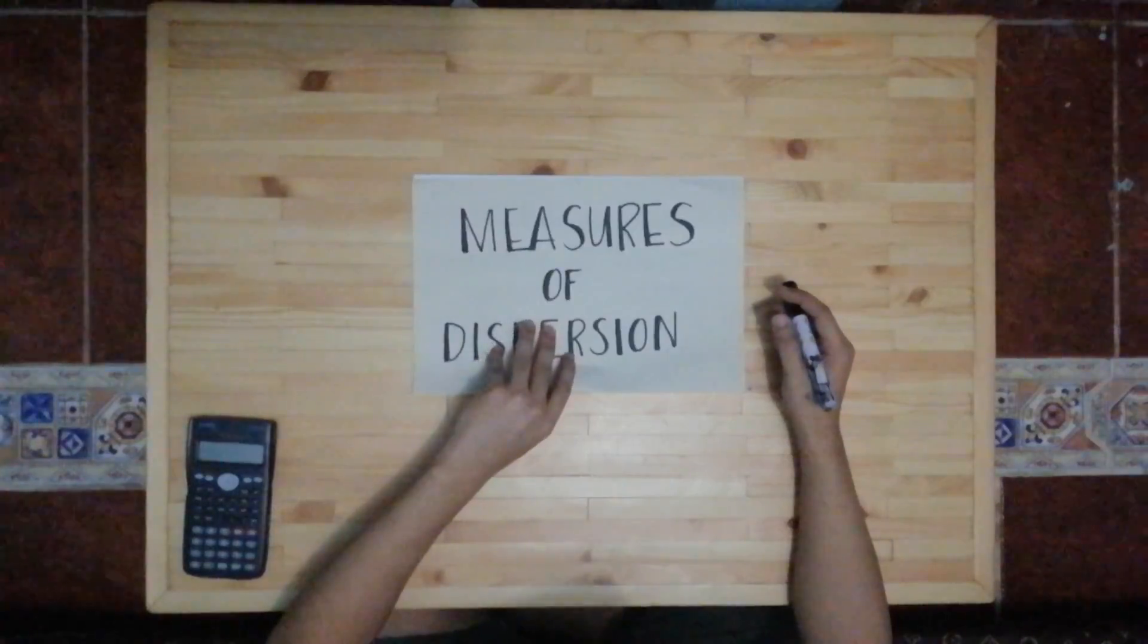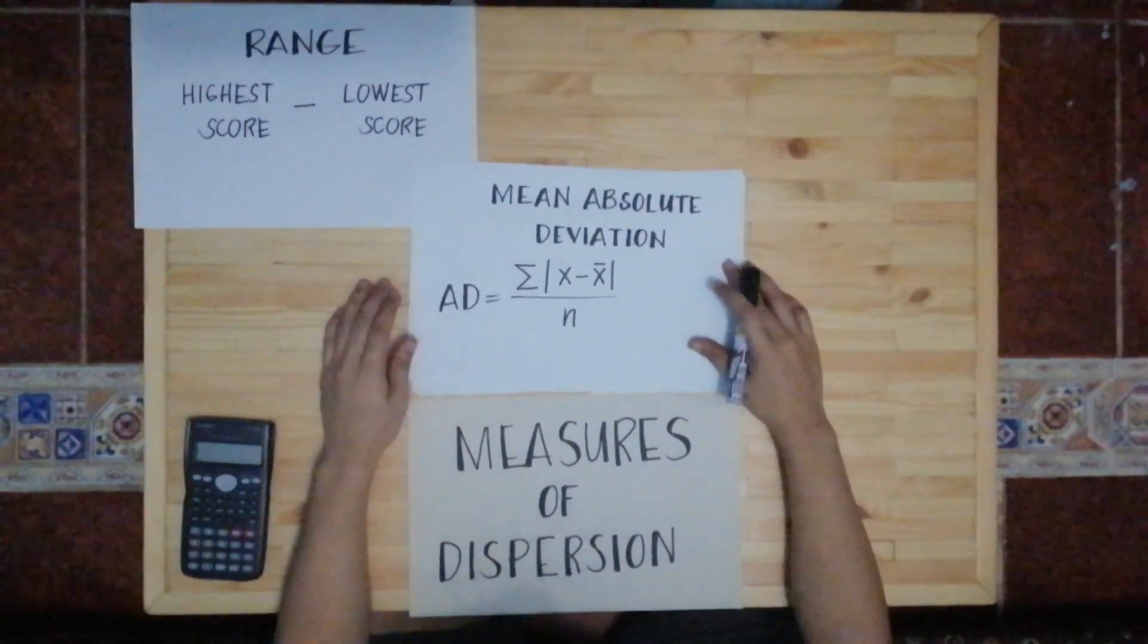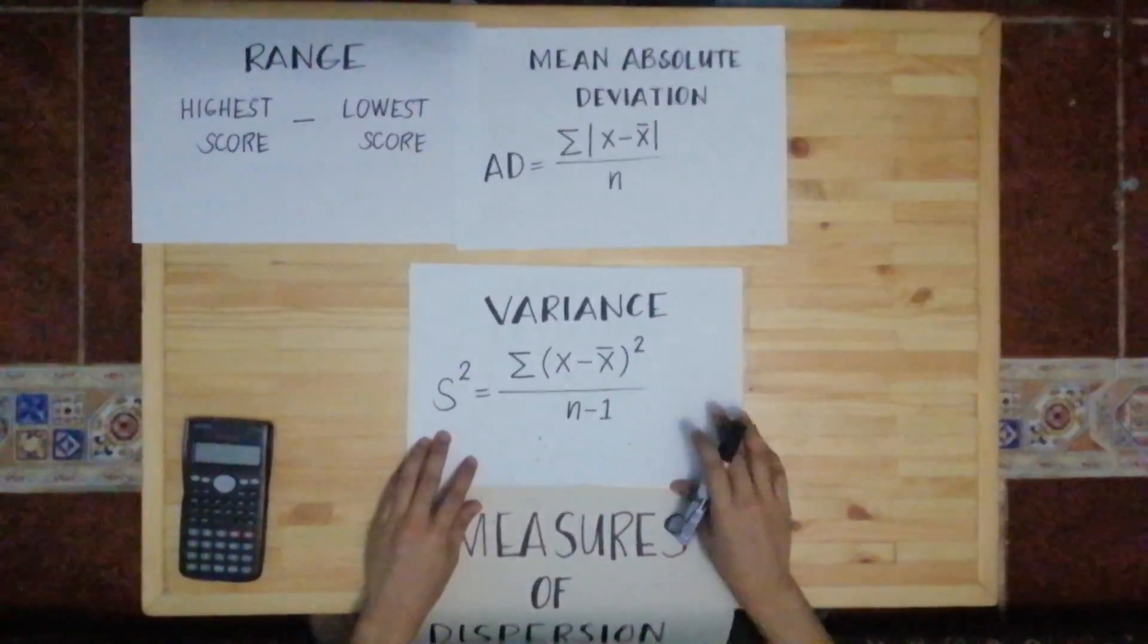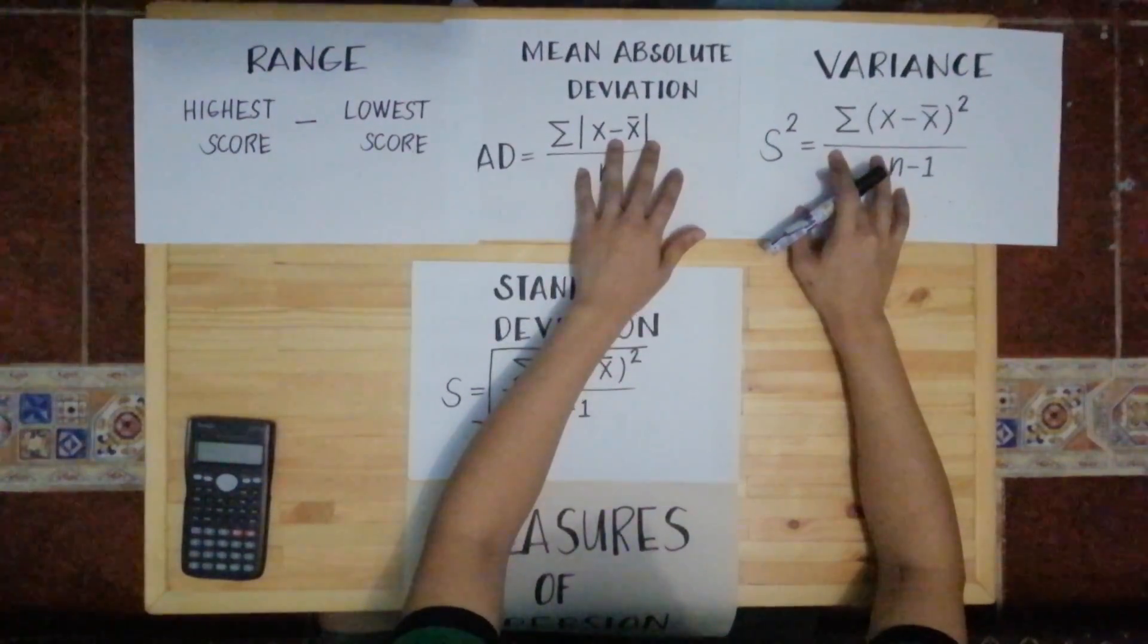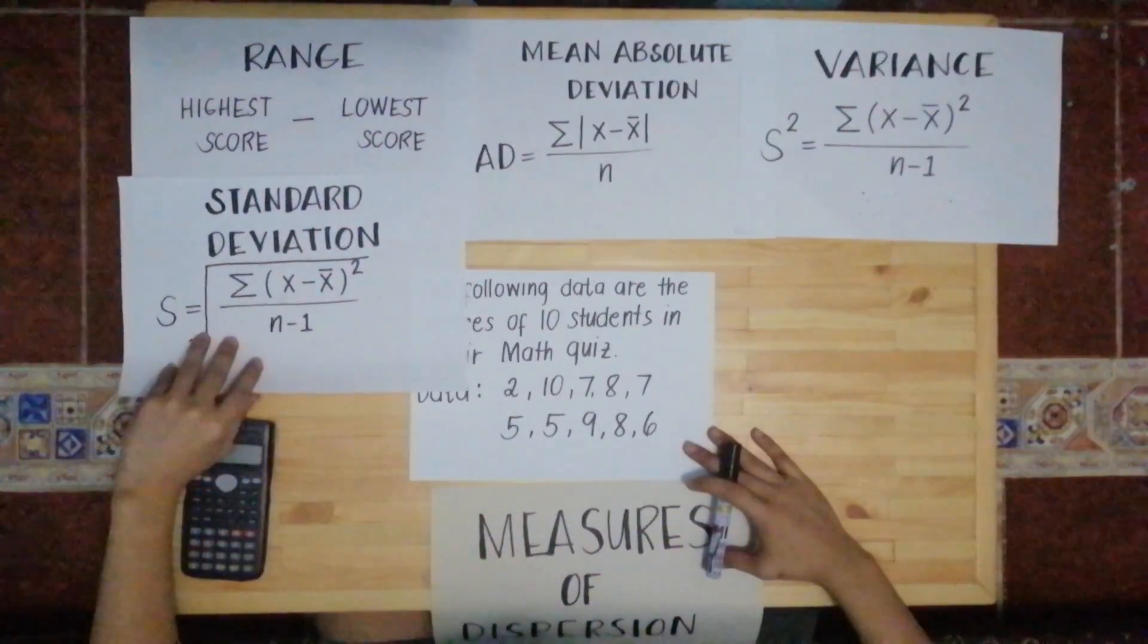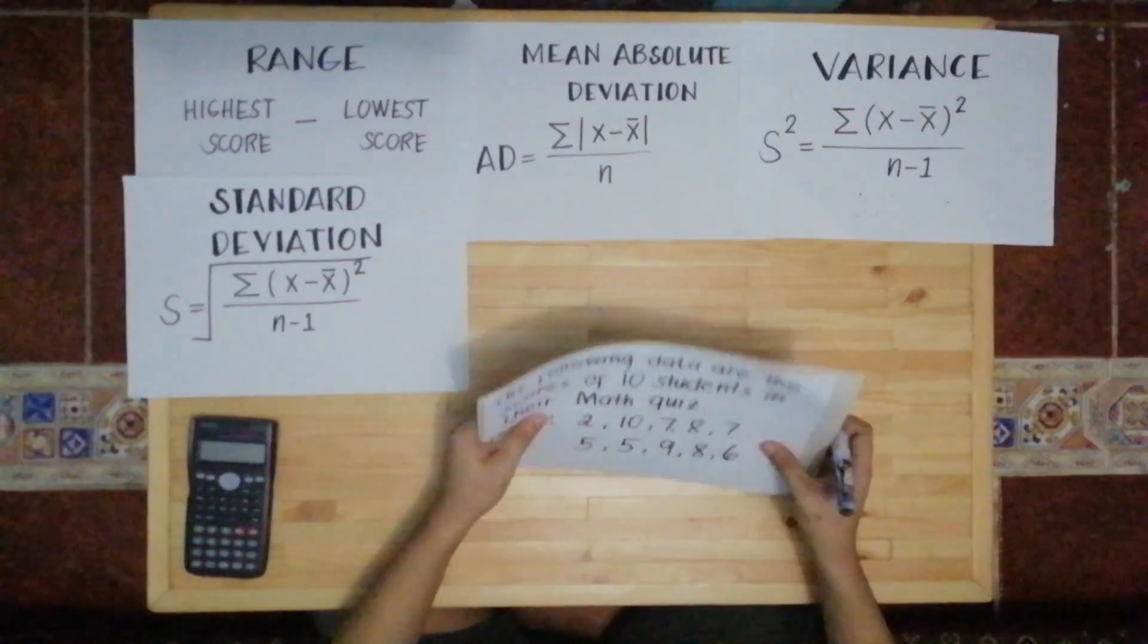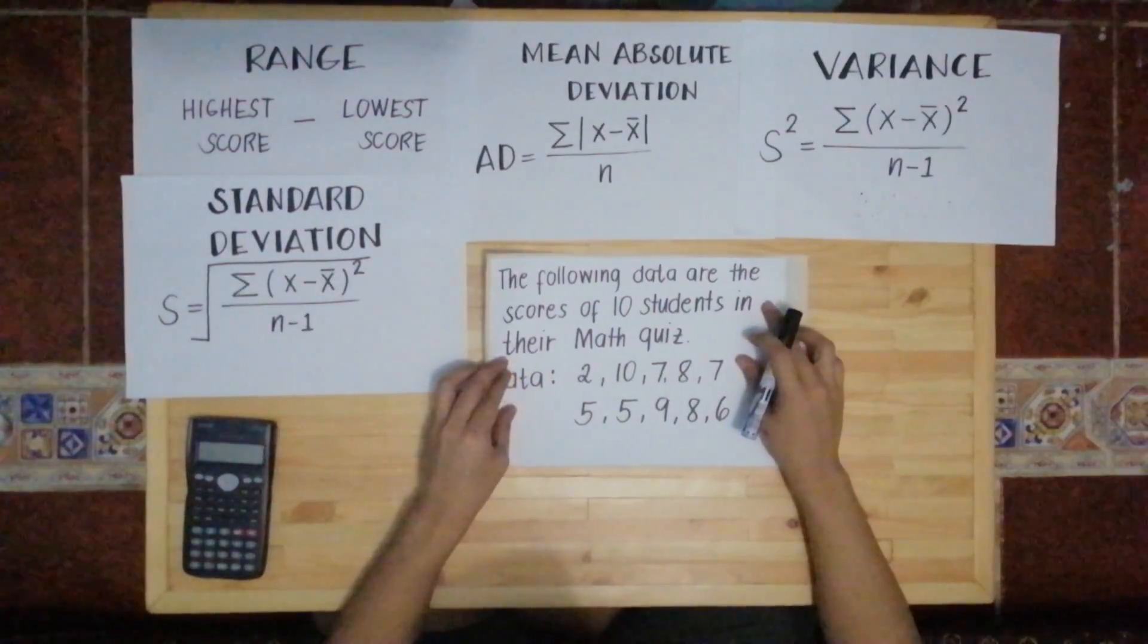The measures of dispersion are: first we have the range, we also have the mean absolute deviation or the average deviation, then we also have the variance, and we also have the standard deviation. So as you can see we have the following formulas. Let's have this example.